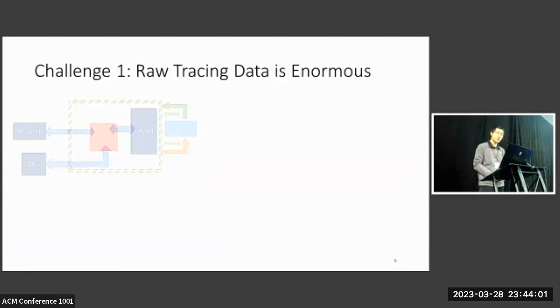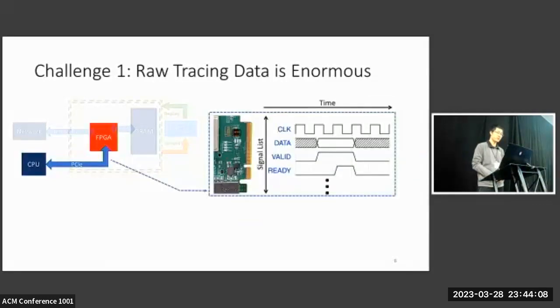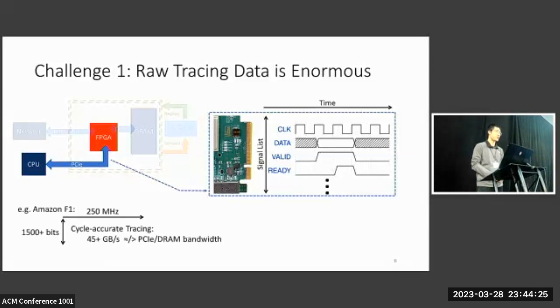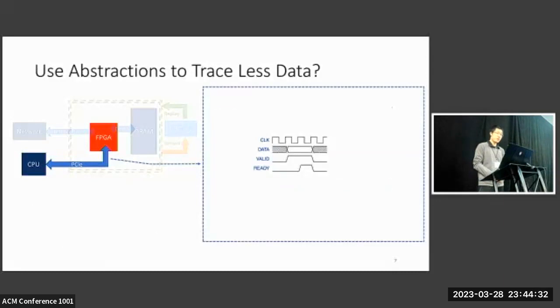There are mainly two challenges for FPGA record replay. The first is that the raw tracing data is enormous. Take the PCIe interface for an example. There are many signals that may change at every clock cycle. And there are multiple interfaces. In real-world setups, such as the Amazon F1 platform, all interfaces contain thousands of bits running at hundreds of megahertz, which translates to a bandwidth that easily saturates PCIe and DRAM.